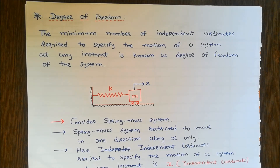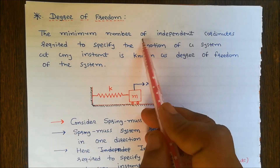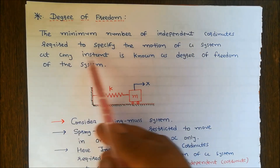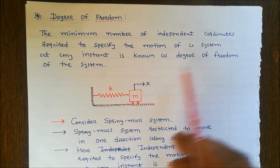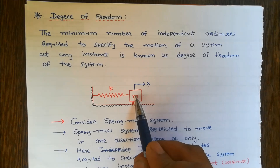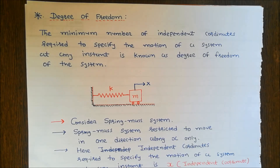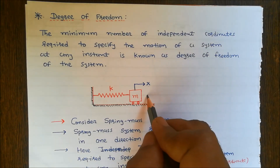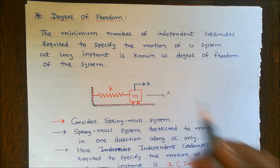Hello friends, today we discuss what is degree of freedom. The definition of degree of freedom is: the minimum number of independent coordinates required to specify the motion of a system at any instant is known as the degree of freedom of the system. To understand this definition, we take one simple example. Here we consider a spring-mass system restricted to move only in one direction, that is along the x direction only.